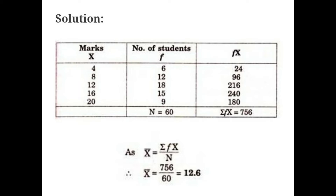Next, find the summation of f — which is also called capital N. Adding all the f values gives 60, so Σf = N = 60. Then add all the fx values — that is Σfx. Adding all the fx values gives 756. Now substitute in the formula: x̄ = Σfx / N = 756 / 60.